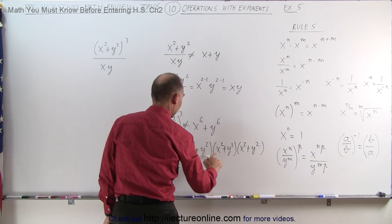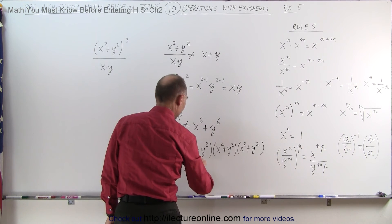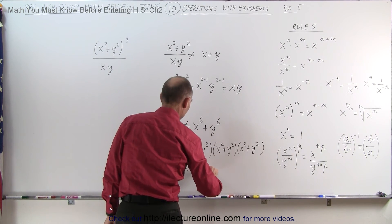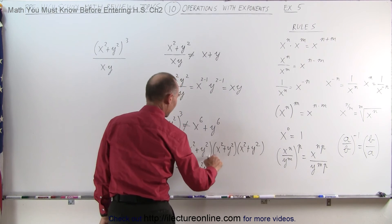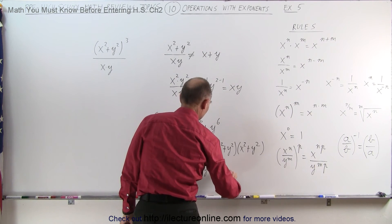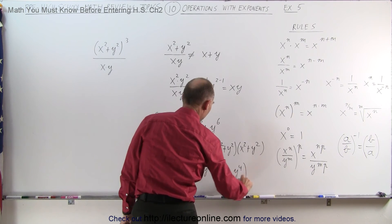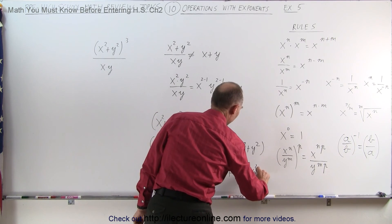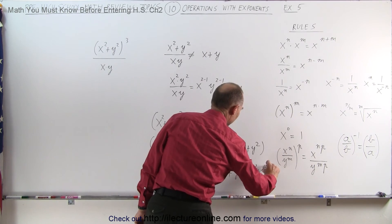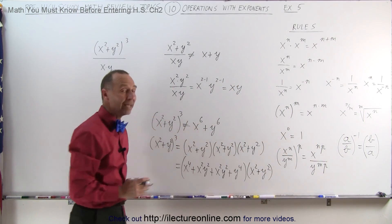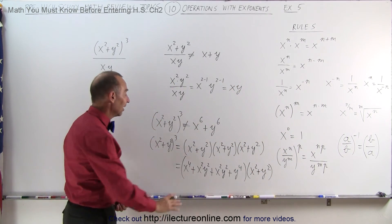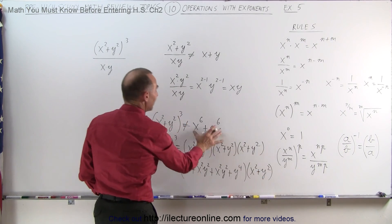This would become x squared times x squared, which is x to the fourth, plus this times this, which gives you x squared times y squared, plus this times this gives you x squared times y squared, plus this times this gives you y to the fourth power. And the whole thing multiplied times x squared plus y squared. Then you have to multiply all this again, and you can clearly see that this is in no way equal to this.